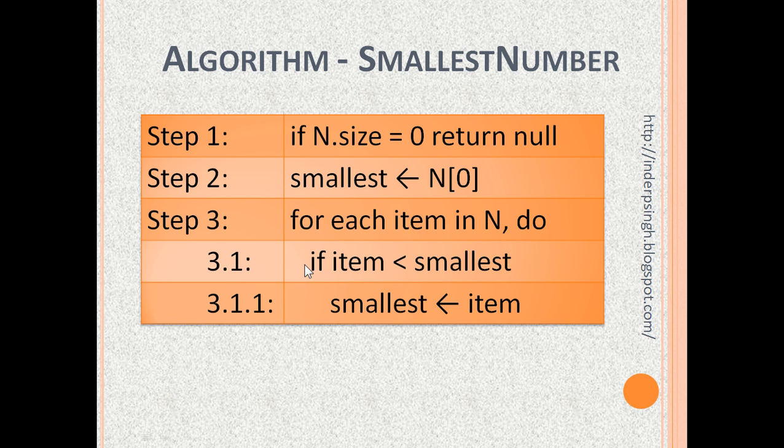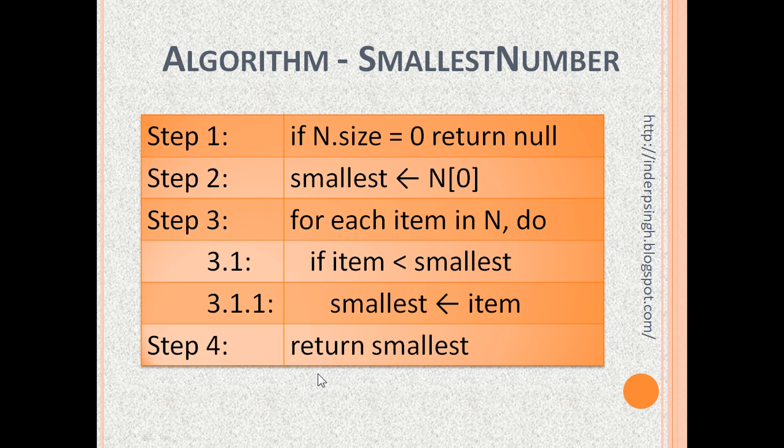Also notice the indentation. The step if is executed for each time the for loop runs, so that is why it is indented under the for statement. Step 4: Return the output as the value in the smallest variable. These four steps are the complete set of steps to find the smallest number in a list of numbers.